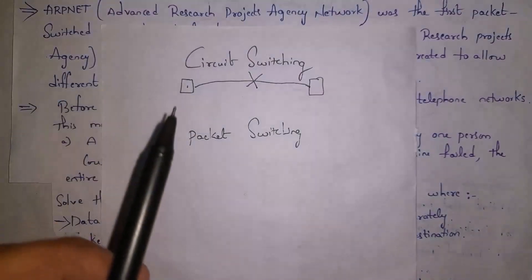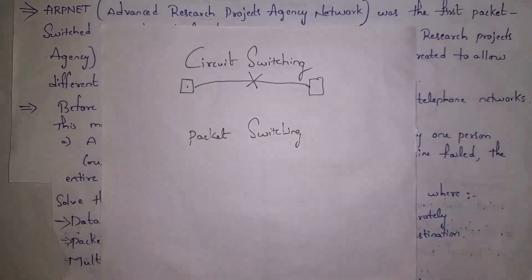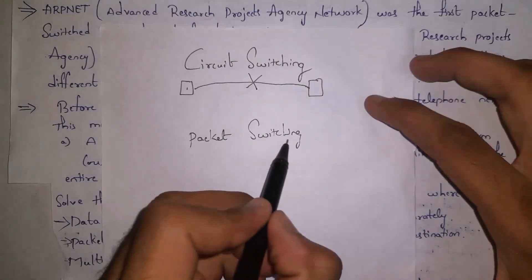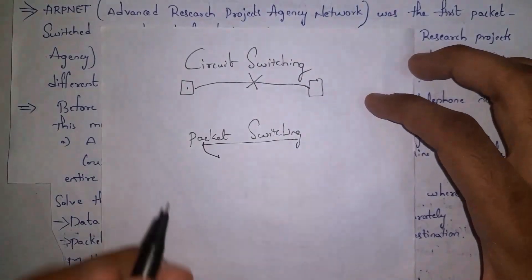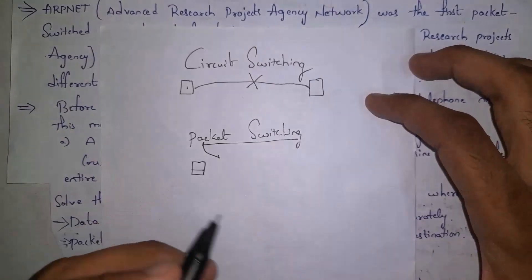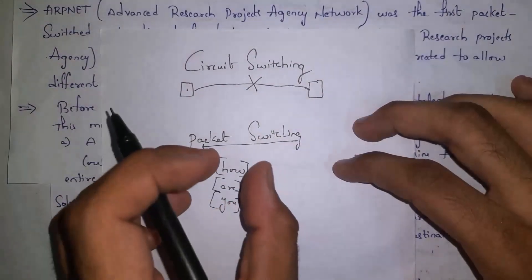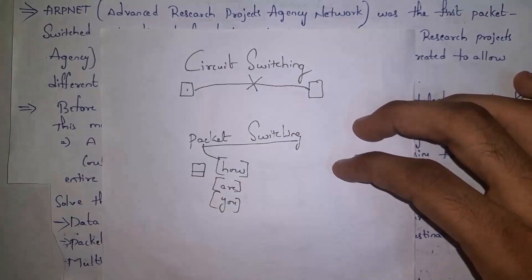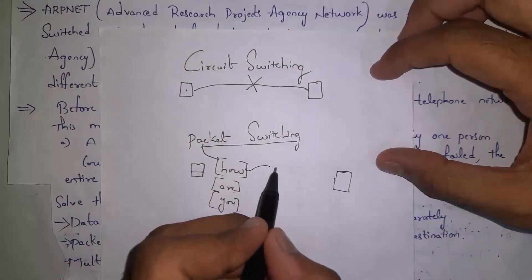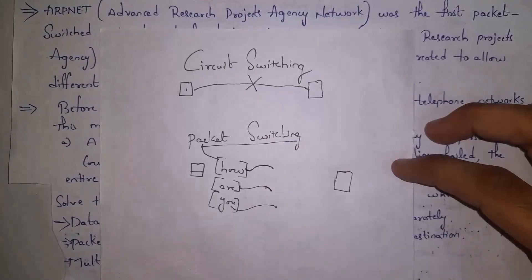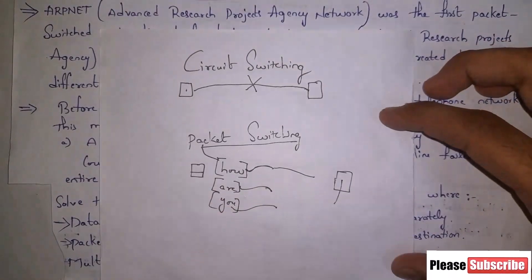By using circuit switching you can communicate with only one person at a time. Old landline phones are examples of circuit switching. For packet switching, present 4G mobiles are examples. The name itself says it — data is divided in the form of packets and they will reach the destination. For example, when I say 'how are you' using my 4G mobile, data is divided into packets like 'how' is one packet, 'r' is one packet, and 'u' is one packet. These packets will find the best route and reach the destination, and after reaching the destination they all reassemble in order, so the person will hear 'how are you.' This is packet switching.